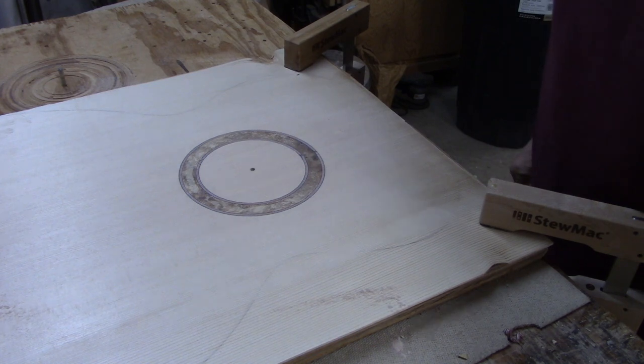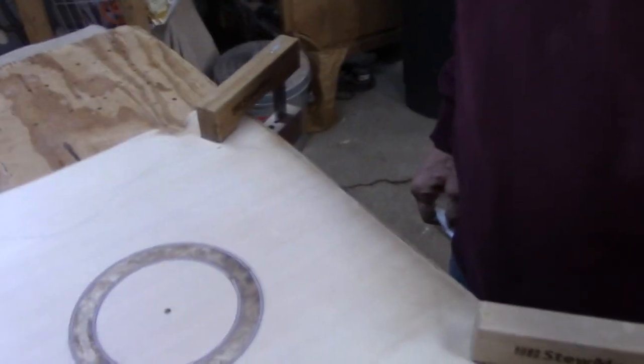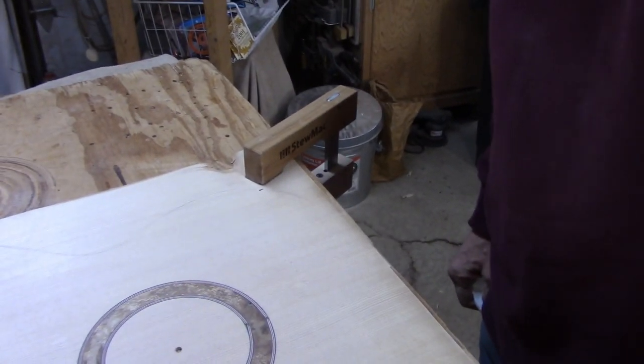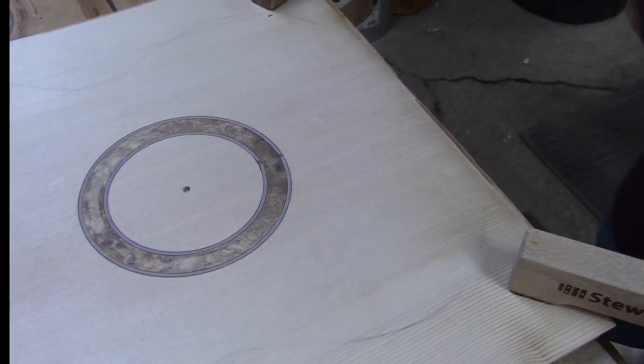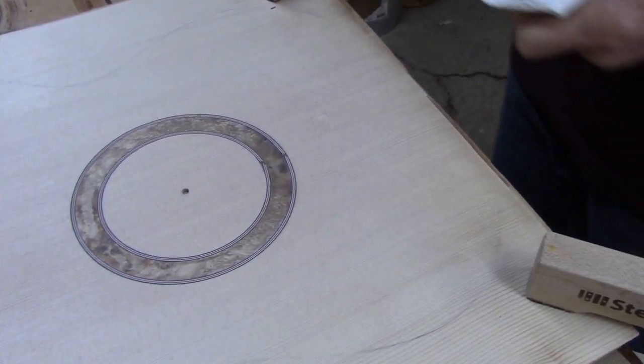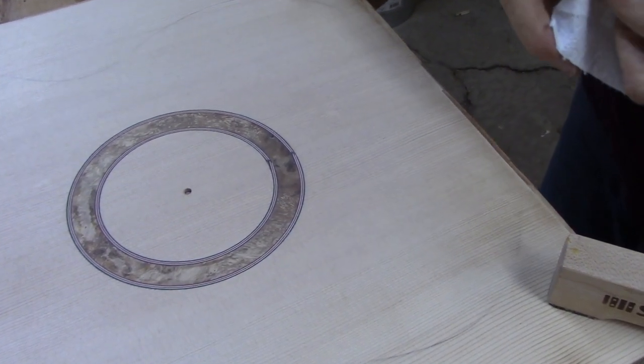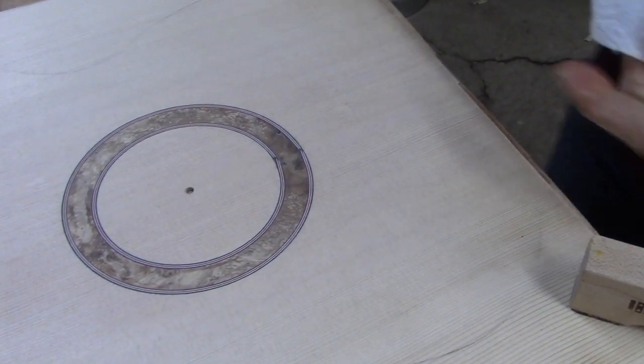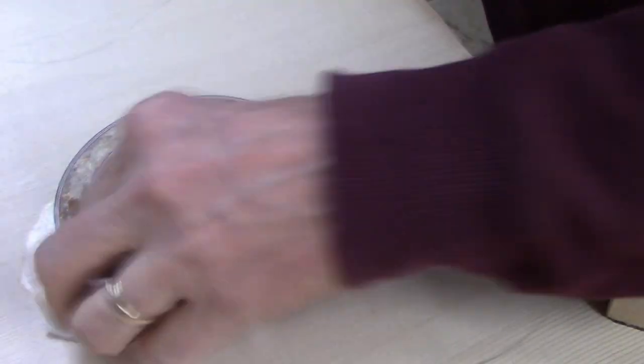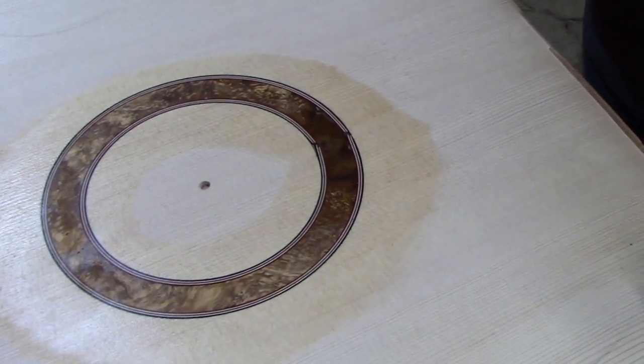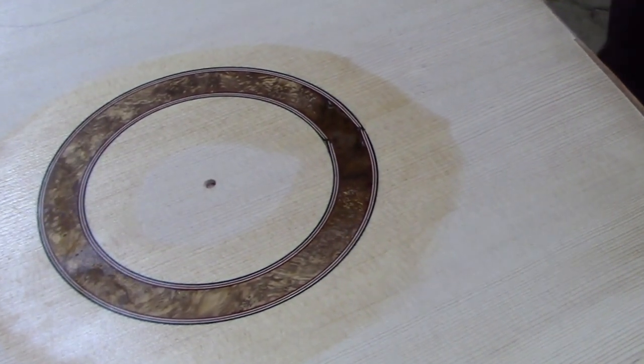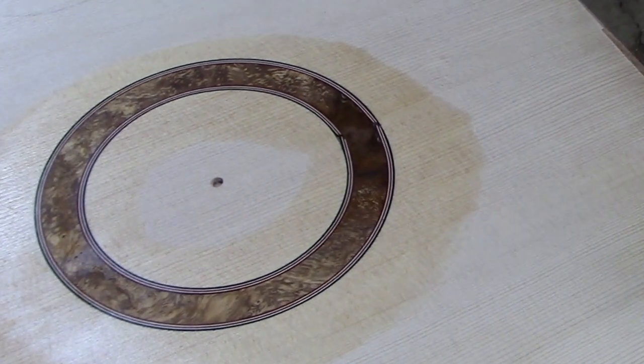Okay, that looks pretty good to me. Now if I want to get a quick glimpse of how this is going to look under the finish, I can wipe some naphtha on the surface, and this will give me a nice indication of how it's going to look in the completed guitar. Pretty great.